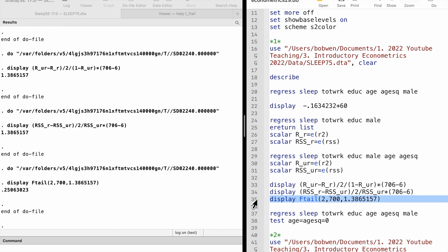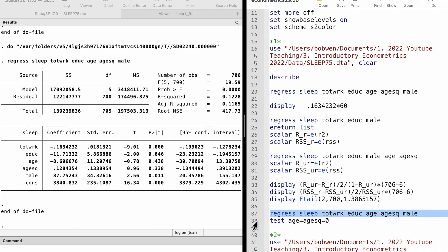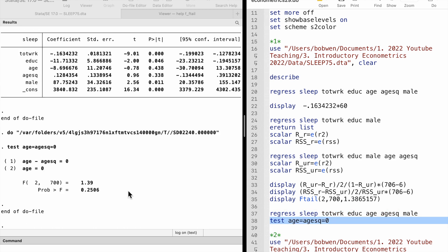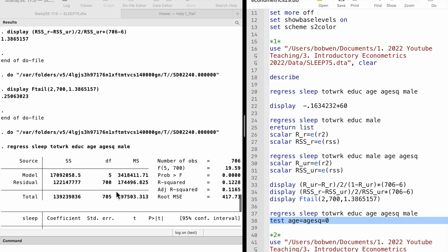The p-value is 0.25. The age and its square are jointly insignificant at any conventional level. We could not reject the null hypothesis that age has no effect on sleeping, holding other factors fixed. In Stata, we could use the test command to do the f-test after running the unrestricted model, that is the long model with the age variables. It gives the same answer as using the f-statistics formula.